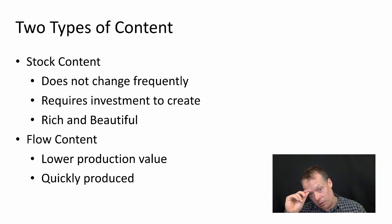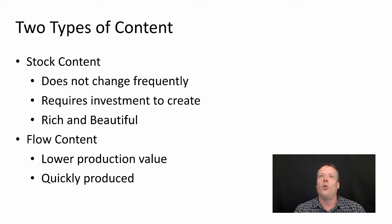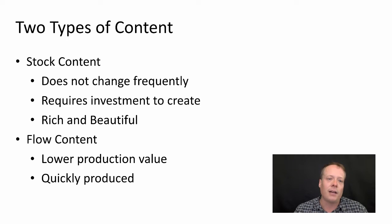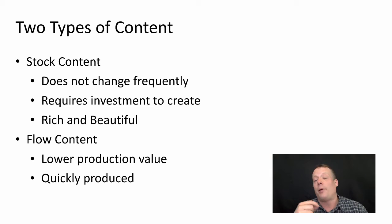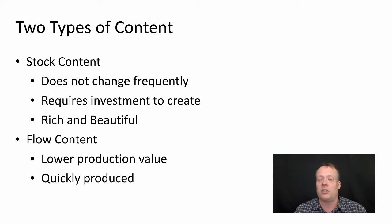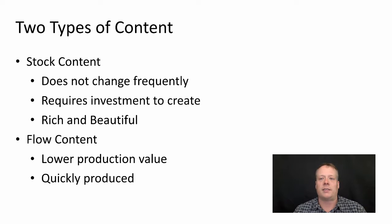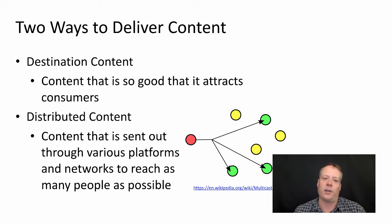It's important to recognize — and you can note this during the content audit — that there are really two types of content. There is stock content, which you should invest a lot of time in and make sure it's well done. This is often part of your brand style guidelines, content that does not change frequently but could be very expensive to create. Then you have flow content, like tweet text for instance, that might have lower production value and is quickly produced, but still aids in content marketing. Having labels for these types helps you determine what content you have and how it can be reused.